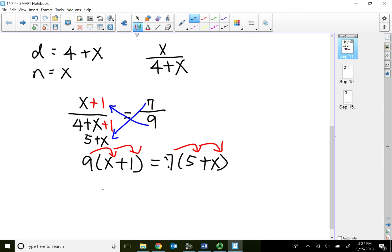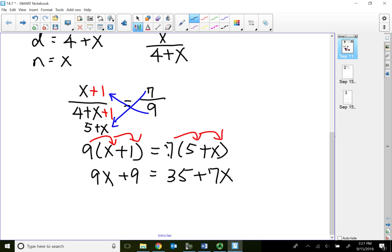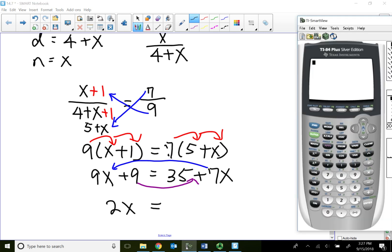Let's do a quick distribution. Then I should get nine x positive nine equals 35 and positive seven x. So this is a linear equation, so let me move my seven x over to the left side. At the same time, the nine need to come back to the right. So I should get minus seven x, so that would be two x equals 35 minus nine.